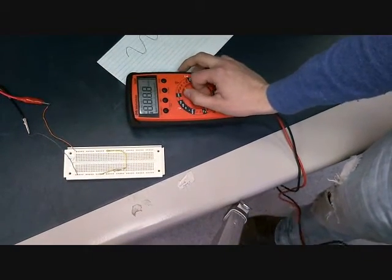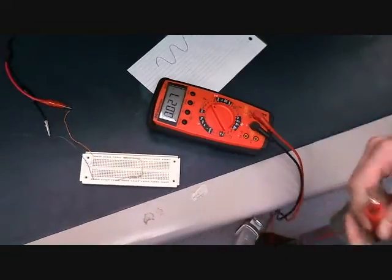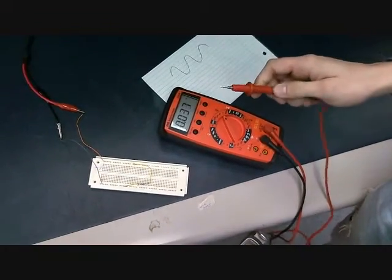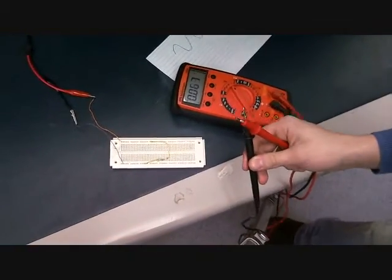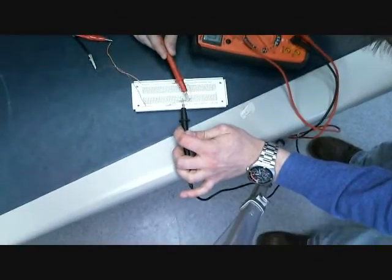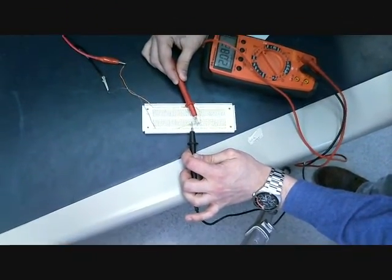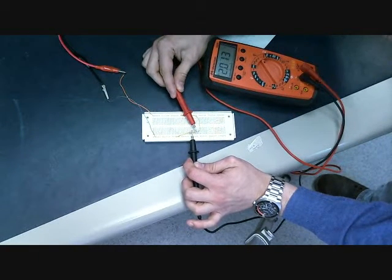The first thing we're going to do is set our multimeter into the DC voltage range and measure the DC voltage, making sure we are putting the prongs the right way, so black to black and red to red. The value is 2.08 volts, this is our VDC.